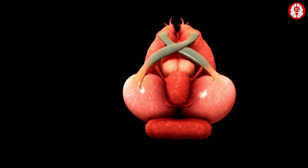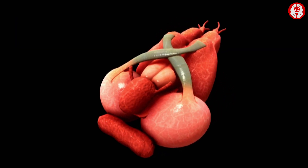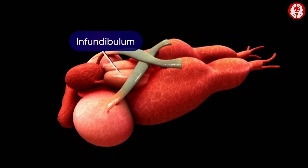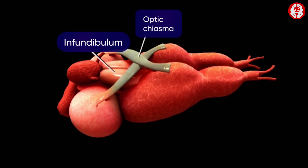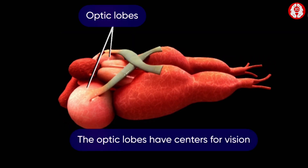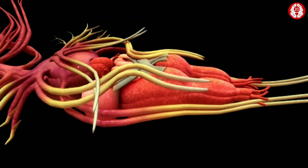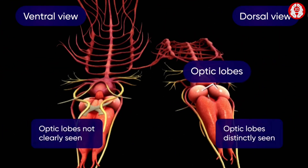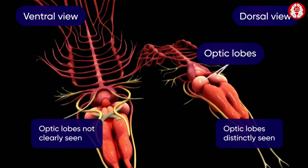Anteriorly, two optic nerves from the two eyes cross each other on the ventral surface of the infundibulum and form an optic chiasma. The optic lobes have centers for vision. These optic lobes are distinctly seen in the dorsal view but not clearly visible in the ventral view.